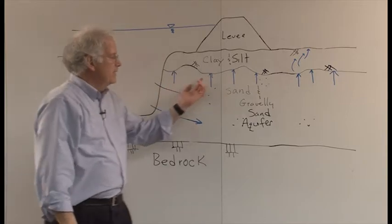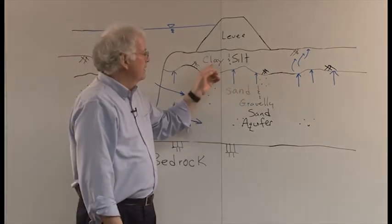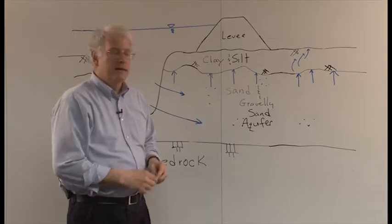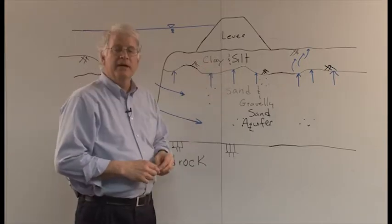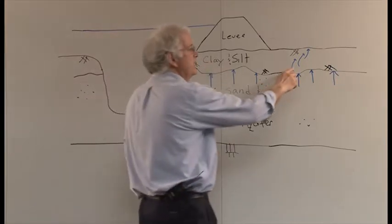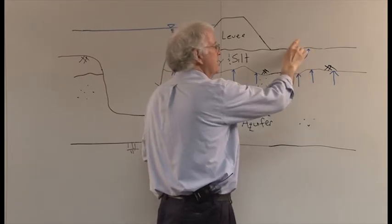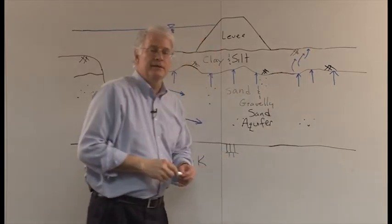That flow can cause excess pressure to act upwards on the base of a clay and silk blanket, and if the flood is in place for a long enough time, there will be groundwater and seepage flow through the blanket and emerging at the toe of the levee.